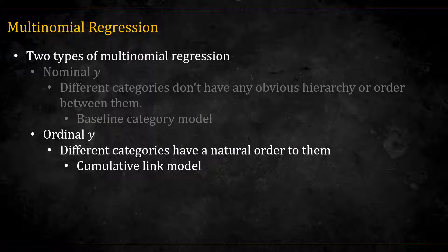As mentioned in my previous videos, there are two types of multinomial regression. In the last video, we saw how to deal with nominal response data, where there is no natural order to the different categories. In this video, we are going to focus on ordinal data, where the categories do have natural order to them. The way to model this is by using the cumulative link model.